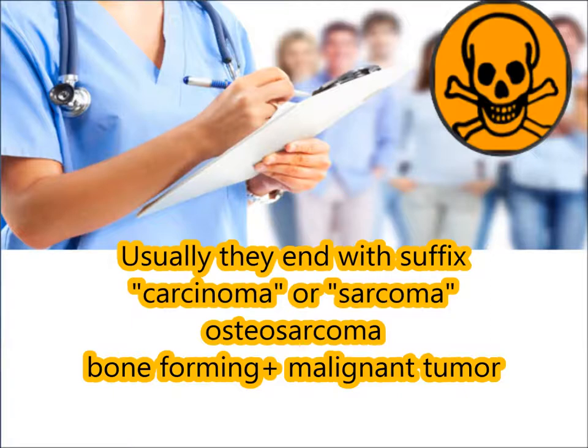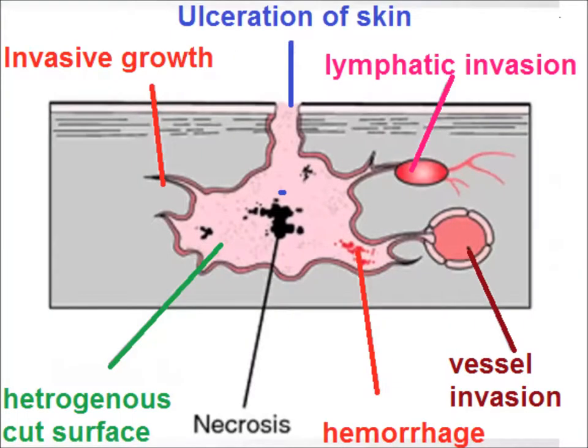Osteosarcoma means a bone-forming malignant tumor. The characteristic features of malignant tumors are that they are invasive, so they are adherent to the underlying structures. There is ulceration of skin, they have a heterogeneous cut surface, there is necrosis and hemorrhage, and usually they invade blood vessels or lymphatics — that's why they also have metastatic disease.